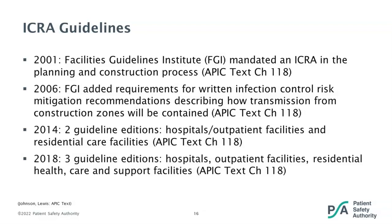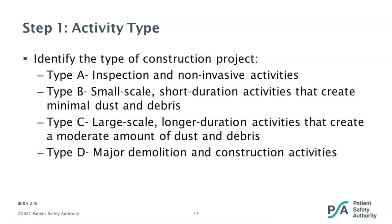The template we will be using in this presentation is from the American Society for Healthcare Engineering. Their updated ICRA 2.0 tool was released last year and is available to download from their website at no cost. This is not the only available tool, but it is widely used and lays out the process in a very user-friendly fashion. The first step in this tool is to determine the activity type. The types range from A to D: Type A — inspection and non-invasive activities; Type B — small-scale, short-duration activities that create minimal dust and debris; Type C — large-scale, longer-duration activities that create a moderate amount of dust and debris; and Type D — major demolition and construction activities.